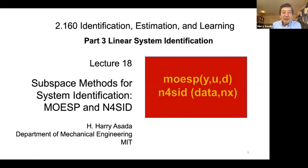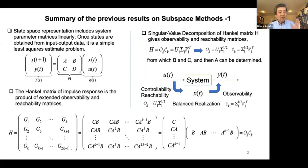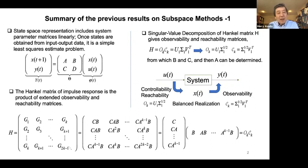This is Lecture 18, the last lecture in Part 3: linear system identification. Last time we looked at the motivation behind this method. The prediction error method is classic and widely used; however, parameters are often not linearly involved in the predictor, so you have to solve a non-convex optimization problem — that's really hard. On the other hand, if you look at the state equations, matrices A, B, C, D are linearly involved, so this is a much easier formulation.